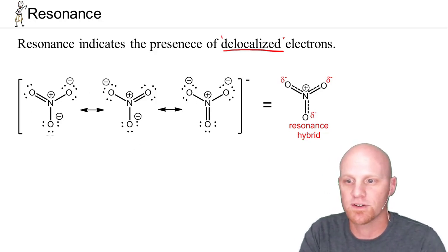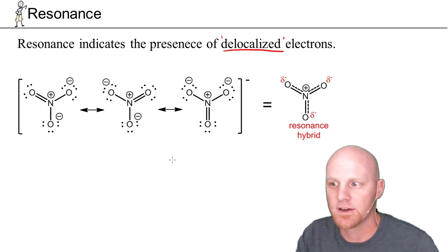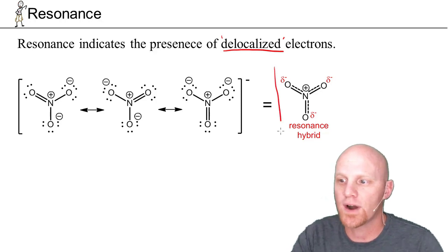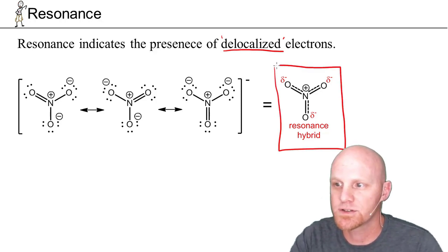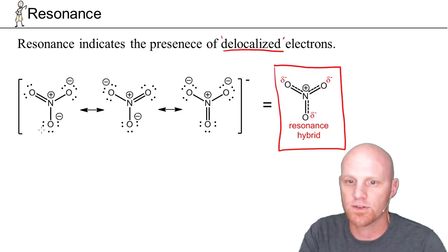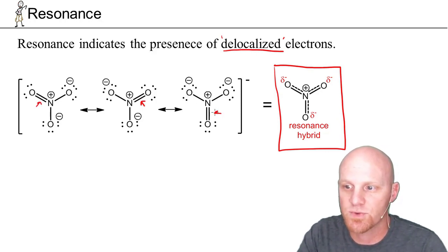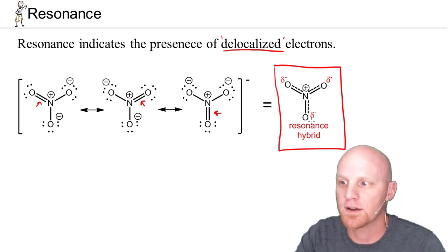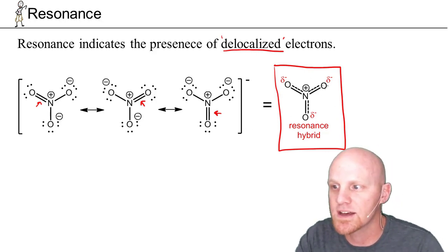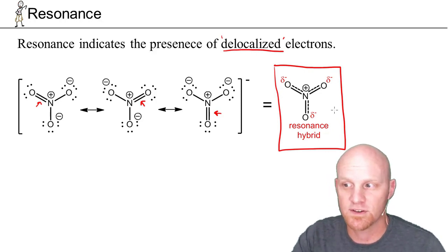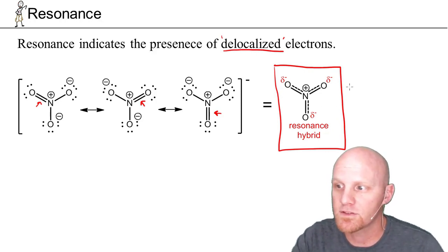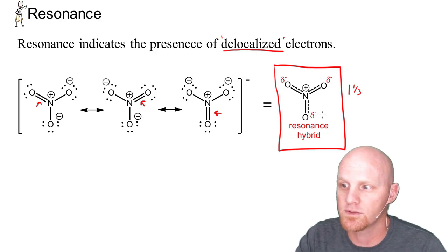We draw these resonance structures, and they don't really exist. What really exists is some combination or average of the resonance structures — the resonance hybrid. There's this extra pi bond, and it's in different locations across different resonance structures. The truth is that extra pi bond is in all three locations at the same time, partially. Since it's shared in three locations, that's an extra third of a bond, so these would all be one-and-one-third bonds.